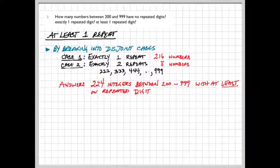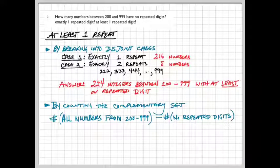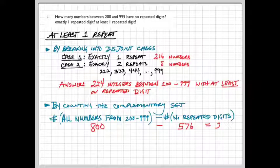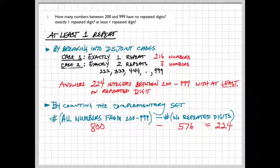Now, if you don't like that method, we could try a different one. Instead, we could count the size of the complementary set, namely start with all the numbers between 200 and 999 and subtract off those numbers with no repeated digits. That will leave you with the numbers that have at least one repeated digit. Well, there are 800 numbers between 200 and 999. In the first part of this problem, we determined there were 576 numbers with no repeated digits. So the difference here gives us 244. Notice, this is exactly the same answer as doing it the other way. So I think we can be pretty assured that we have done all three parts of this problem correctly.